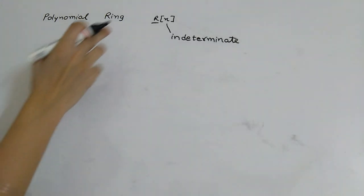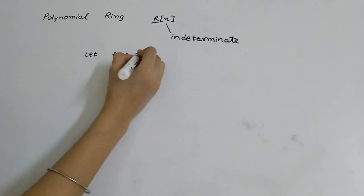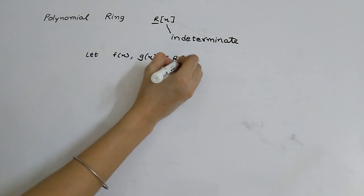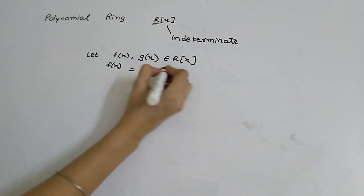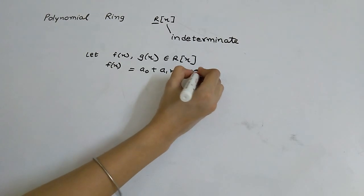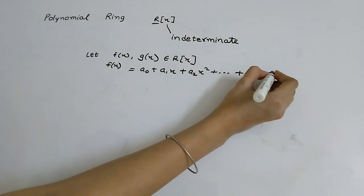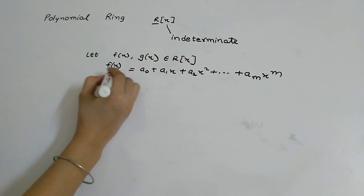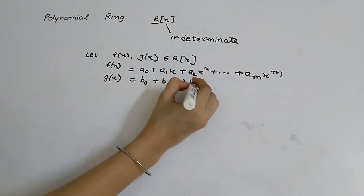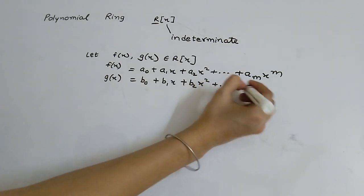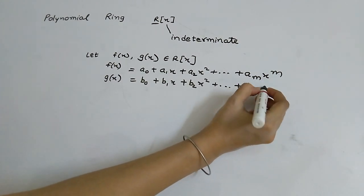We take two elements from R[x]. Let f(x) and g(x) belong to R[x], where f(x) = a0 + a1x + a2x^2 + ... + amx^m, and g(x) = b0 + b1x + b2x^2 + ... + bnx^n.